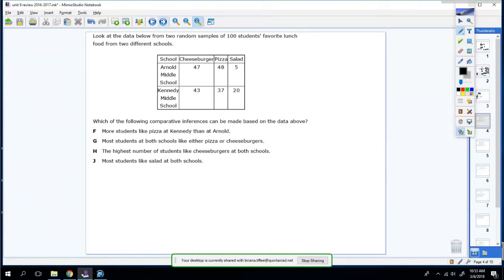Look at the data below from two random samples of 100 students' favorite lunch food from two different schools. Which of the following comparative inferences can be based on the data above? Comparative inferences means to find what statement is true from the data. More students like pizza at Kennedy than at Arnold. That's false. There's 48 students at Arnold, and there's 37 at Kennedy.